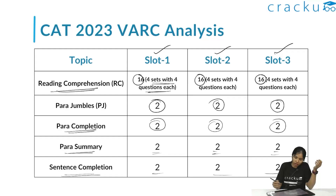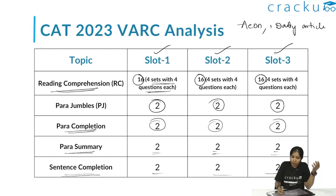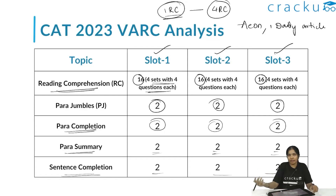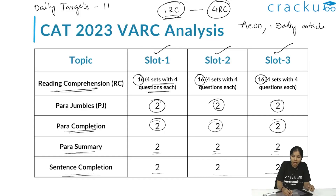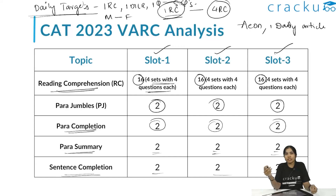For RCs, I suggest reading articles from sources like The Hindu. We at Kraku also provide a daily article in our batch, and students get one daily article to maintain reading habits. It is advisable to solve at least one RC daily from now until the exam — minimum one, maximum four RCs per day. To maintain this consistency, Kraku provides daily targets: one RC, one DILR set, and one Quant test of five questions, released Monday through Friday. We started these daily targets from January and will continue till the exam.